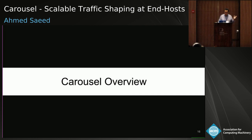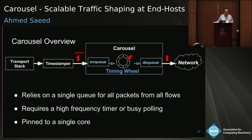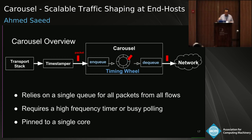Let me give you the life of a packet in Carousel. Carousel relies on timestamping packets based on their rates. Packets transmitted from the transport are first timestamped based on their transmission rate. Carousel then relies on a single queue where all packets from all flows are time-indexed and sorted based on their time index. Packets are dequeued based on their timestamp, requiring fine-grained timers or busy polling — in our implementation we use busy polling. To avoid synchronization problems, we pin Carousel to a single core, though you can have multiple instances for scalability.